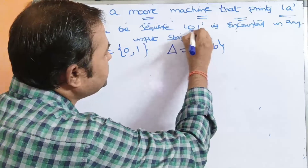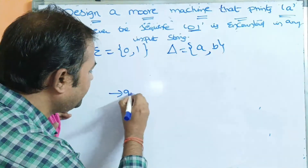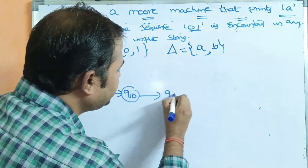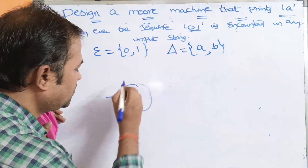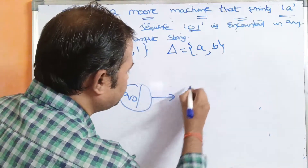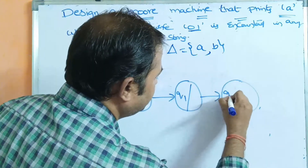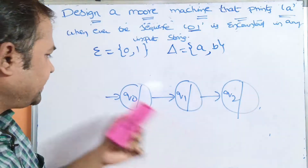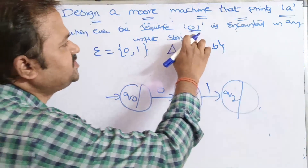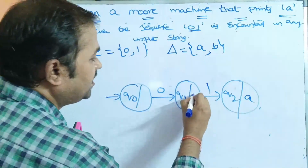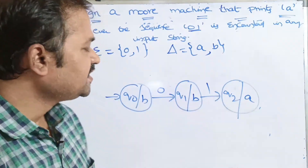The sequence 001 has length 2... we require 3 states: Q0 (initial state), Q1, and Q2. In a Moore machine we represent the output inside each state. Q0 output is B, Q1 output is B, Q2 output is A. If the sequence is 001 then the output is A; otherwise B.